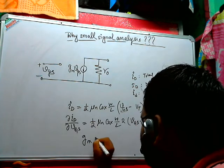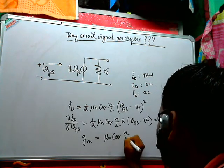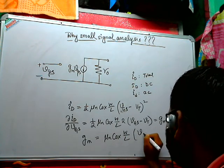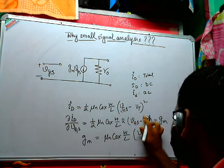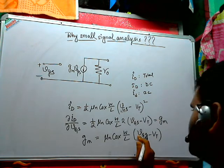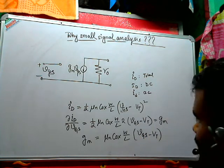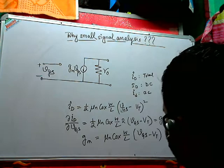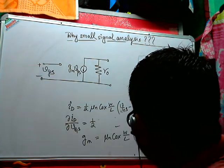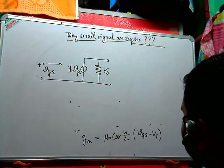GM is basically mu n C ox W by L times VGS minus the capital VT. So this is small v capital G S, the total voltage. Now this total voltage you can write as VGS.